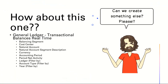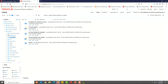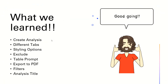I think that is it for this video. So in this video we learned how to create a simple analysis. We saw the styling options for table, column header, and title. We briefly saw the Advanced tab and how to export the analysis to PDF, etc. In the next video we will talk about dimensions, facts, attributes, and measures.